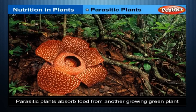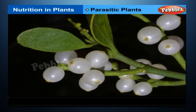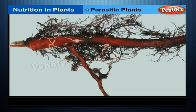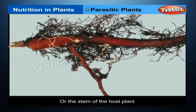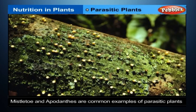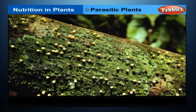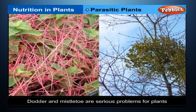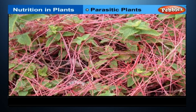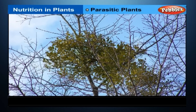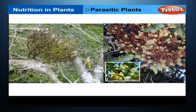Parasitic Plants. Parasitic plants absorb food from another growing green plant called the host. Only the parasitic plant benefits from this relationship. Parasitic plants develop special roots called haustoria which penetrate into the tissues of the host plant, and the prepared food is absorbed from the root or stem of the host. Cuscuta, dodder, mistletoe, and apodanthus are common examples. Dodder can cover woody plants and cause heavy damage to crop plants. Scientists believe that parasitic plants rarely, perhaps never, kill the host plant, so that the parasite can continue to live off it.